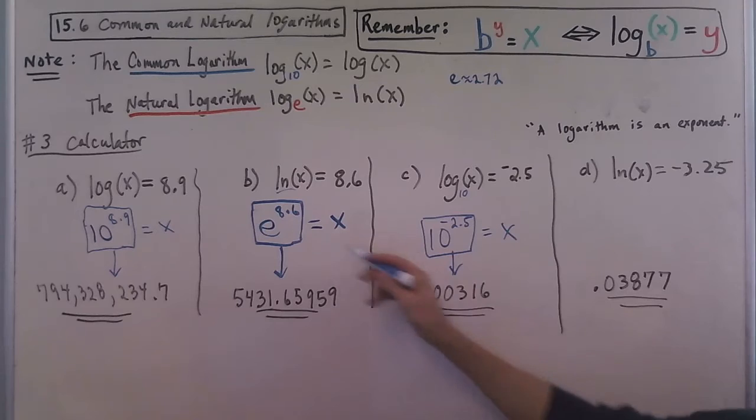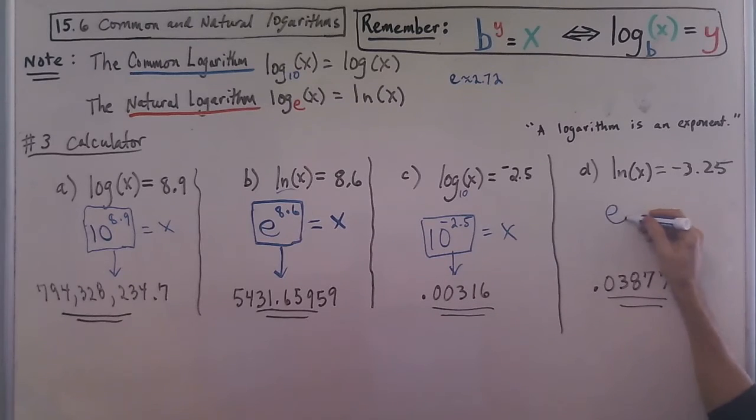And then last one, similar to B, we have e to the negative 3.25 equals X, and that's what we're going to compute on our calculator.